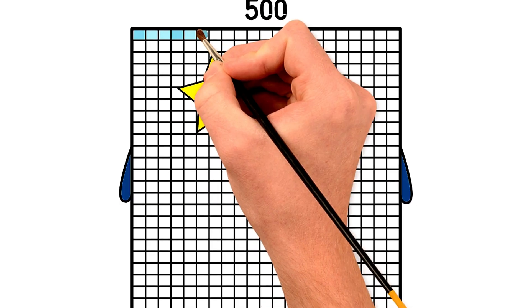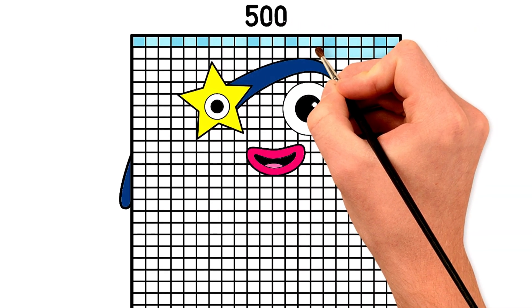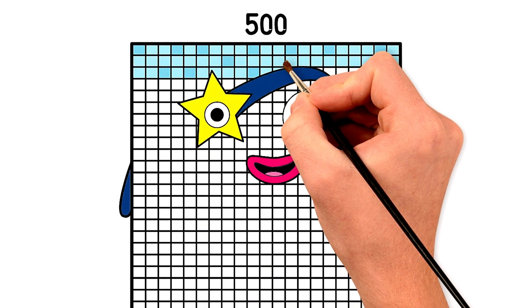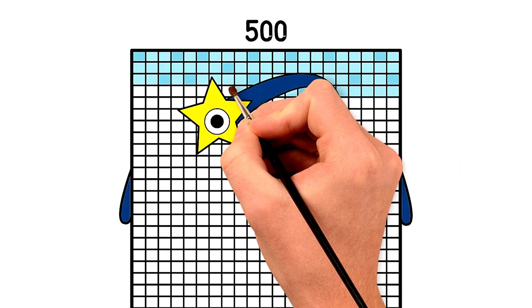Now, color his whole body with your sky blue crayon. Carefully color all of his 500 blocks. This will take a while. So color neatly and slowly.